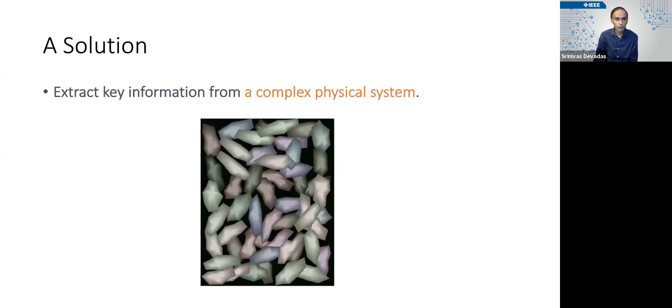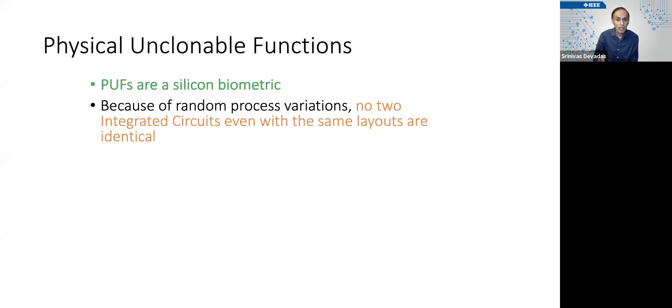There is an alternative approach, which is to extract secret key information individual to each system by exploiting the complexities of the physical system. Not this particular physical system, but rather looking at integrated circuits through the lens of random process variations.